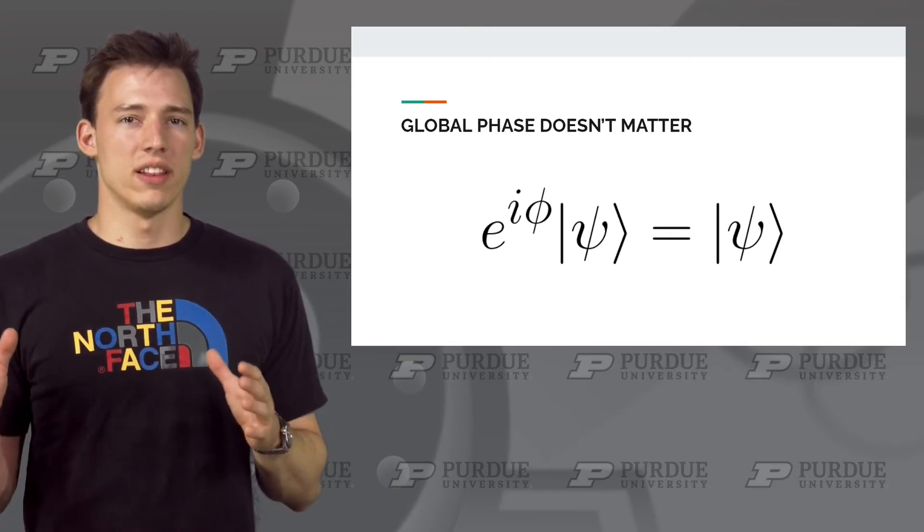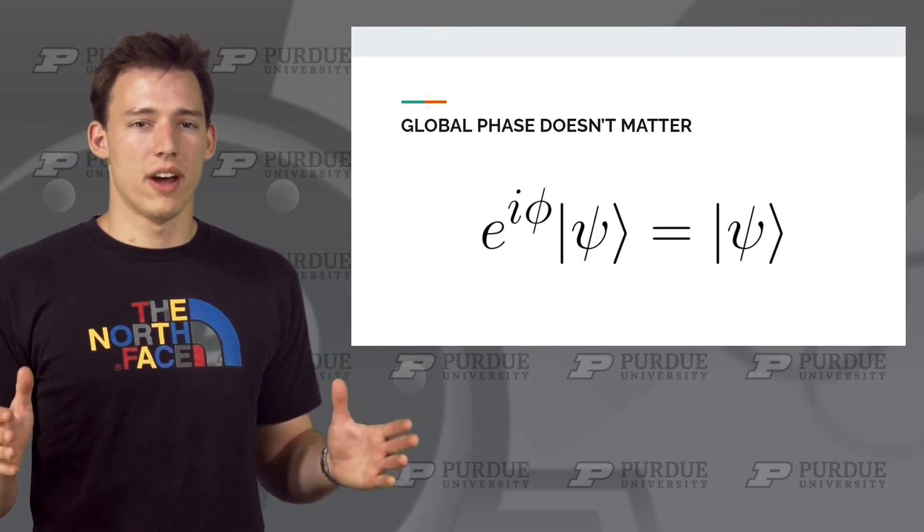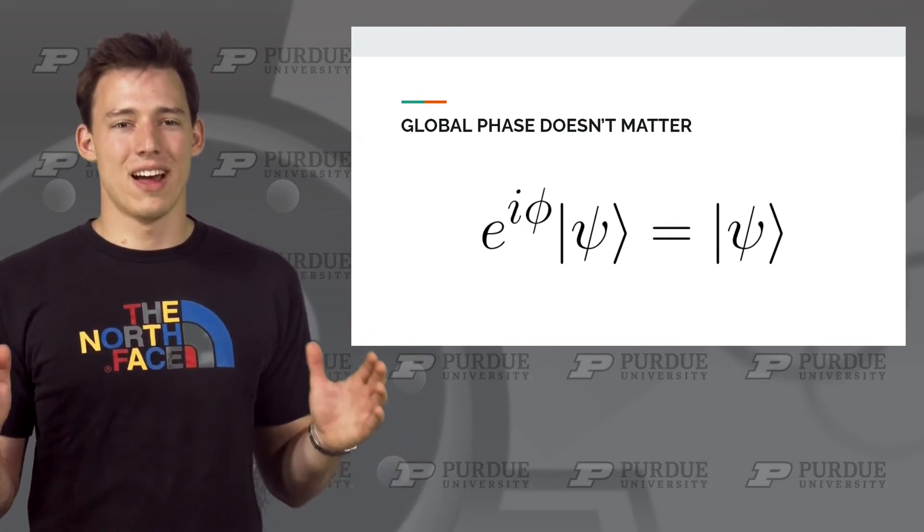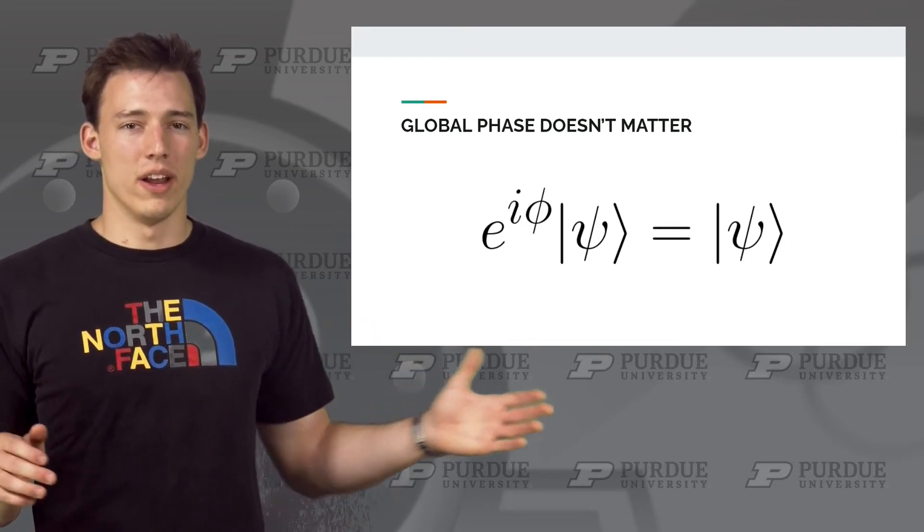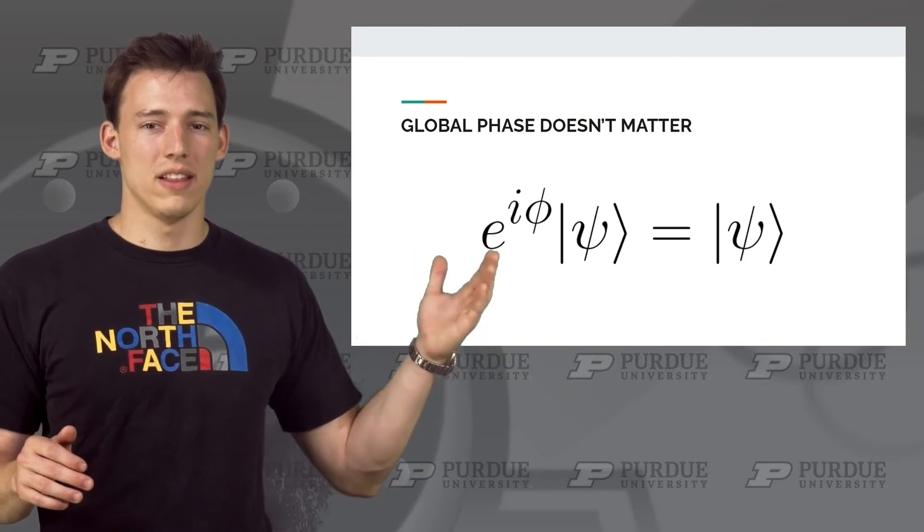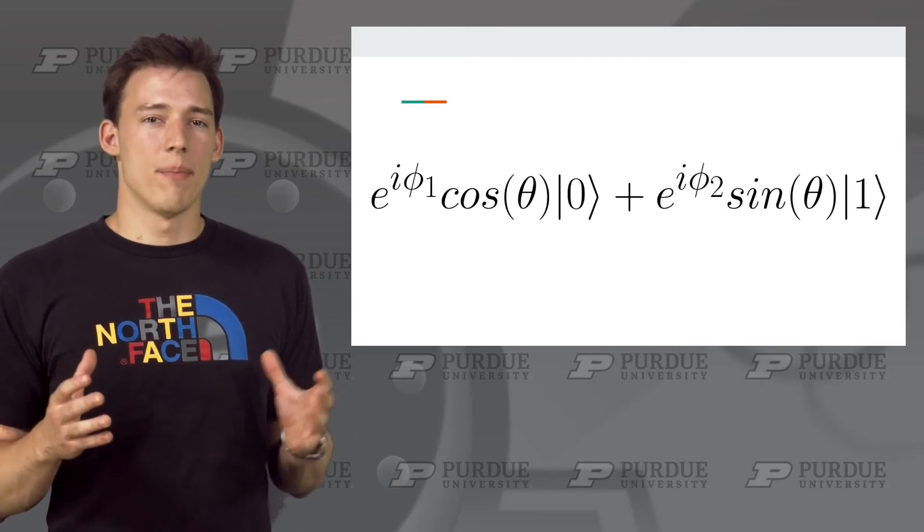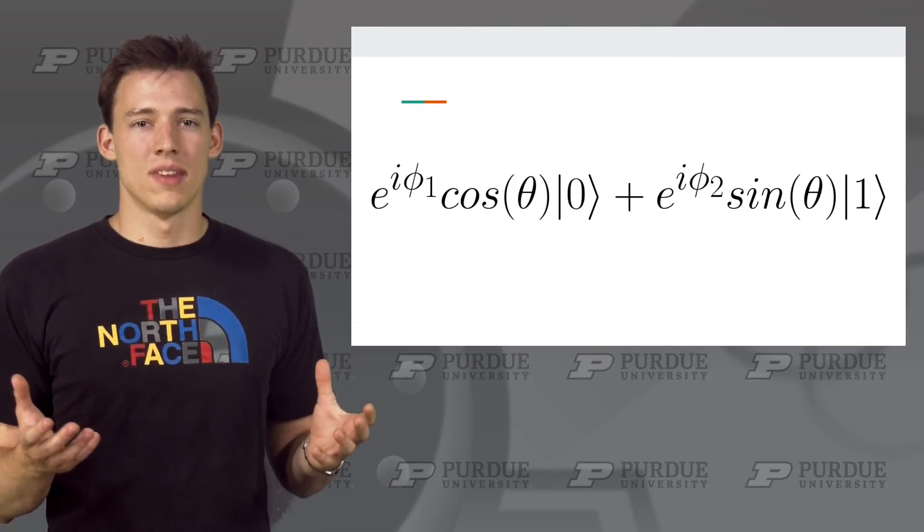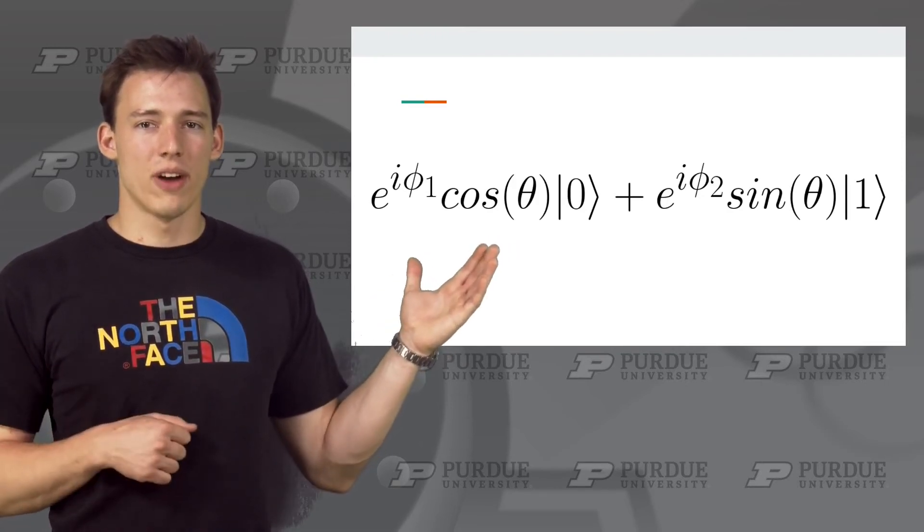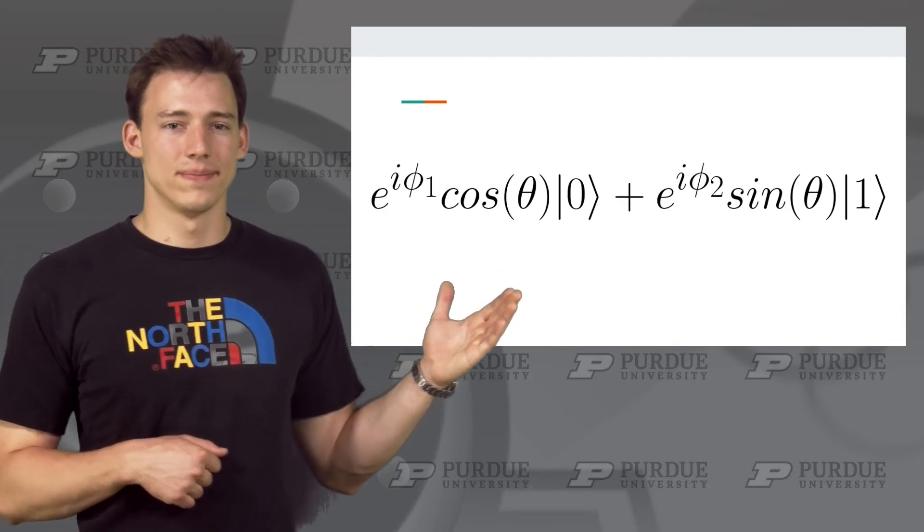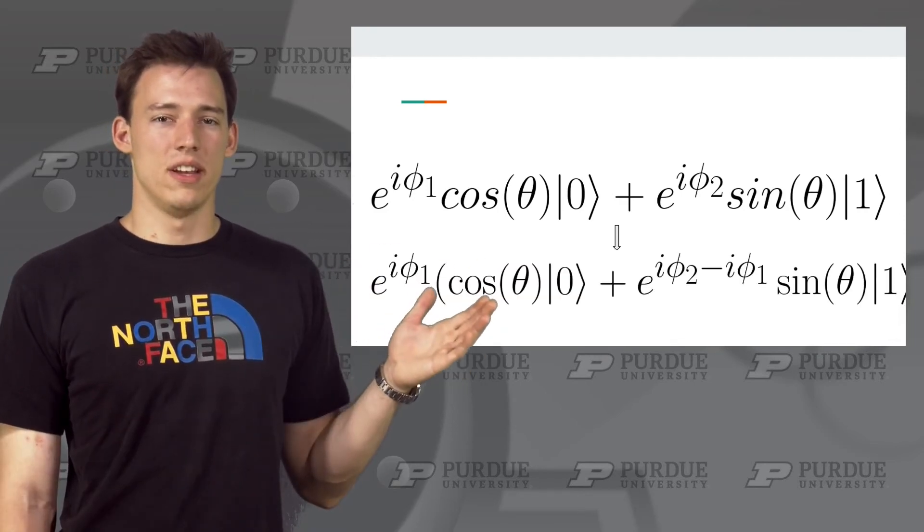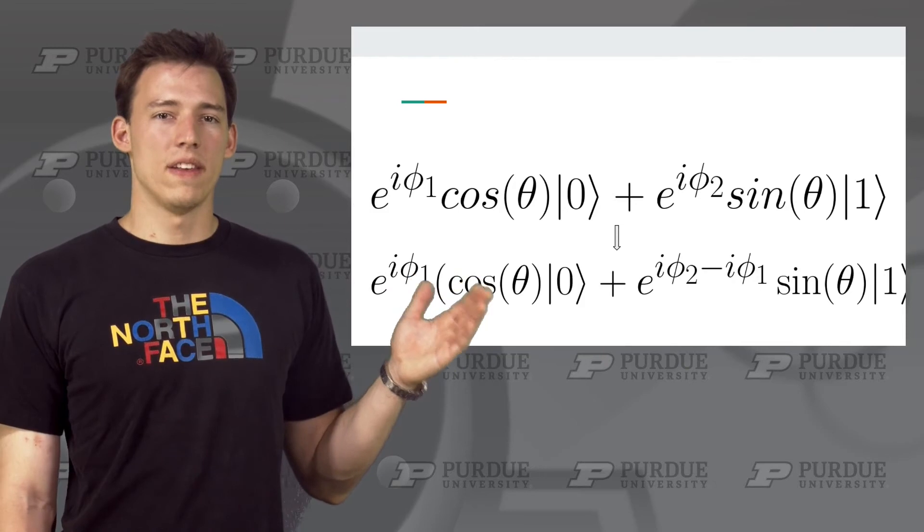So with that in mind, let me just restate that this phase factor, when applied to entire state, makes no difference. It does not matter at all, so we can just ignore it. These two states are exactly the same. Using this fact, we can actually remove the phase factor on the 0 state by applying some algebraic manipulation. If we have this state, we can factor out the e to the i phi 1 factor. By factoring out this e to the i phi 1, we get this equation.